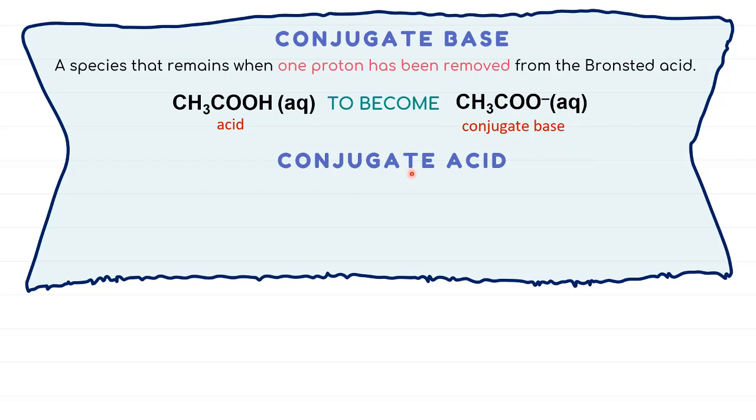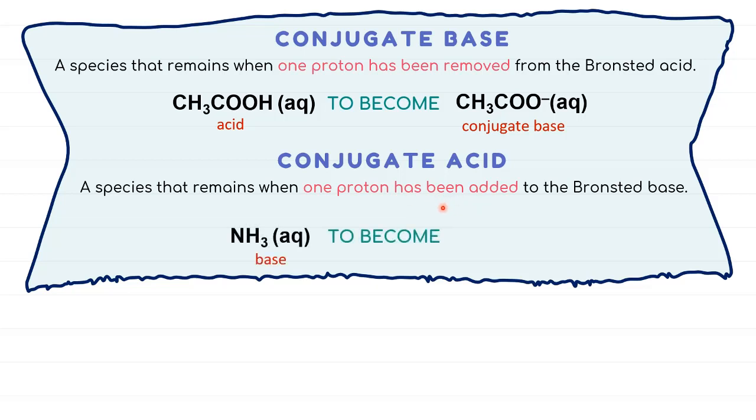In contrast to conjugate acid, it's a species formed after a base accepts a proton. For example, we have ammonia. So this ammonia will act as base and then to form ammonium ion when the base accepts a proton. So we have NH4+ in here. So the species that remain is called conjugate acid.